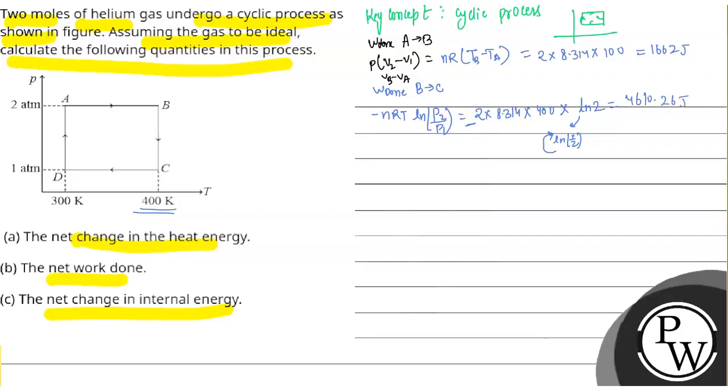Work done in the process C to D: C to D is isobaric compression. Work done will be P times V2 minus V1, that is nR times T2 minus T1. That is 2 moles times R times 8.314. Now here minus will be minus because your final will be 300, obviously compression, minus into 100. That will be minus 1662.8 joules.